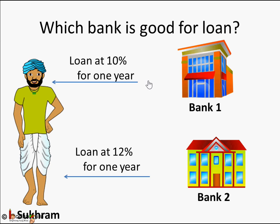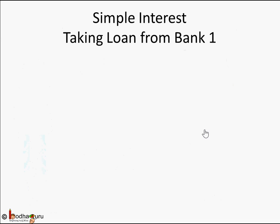Bank 1 said they are going to give a loan at 10% for one year, and Bank 2 said they are going to give a loan at a rate of interest of 12% for one year. One bank is giving 10% per annum, another bank is saying 12% per annum. Which one should you choose when you are taking a loan? Let's find out how much interest we are going to pay.